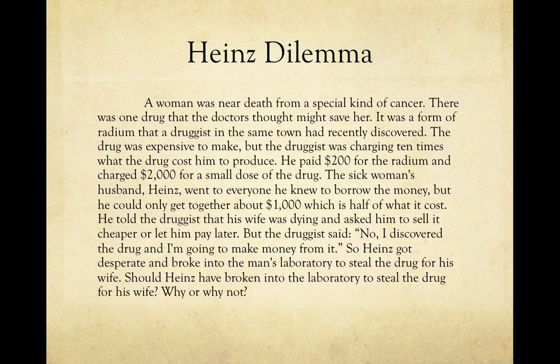The man, the druggist, who discovered the cure — in this case it's radium — only paid $200 for it, but he's charging $2,000 for a small dose, so he's trying to make a profit. The sick woman has a husband named Heinz who does everything he can to save his wife, but is only able to get together $1,000 — half of what the druggist wants. He offered to make a deal: let me save my wife, take what I have now and I'll pay the rest later. But the druggist said no. So Heinz got desperate and broke into the man's laboratory and stole the drug for his wife. The question we ask is: should Heinz have broken into the laboratory to steal the drug for his wife? Why or why not?